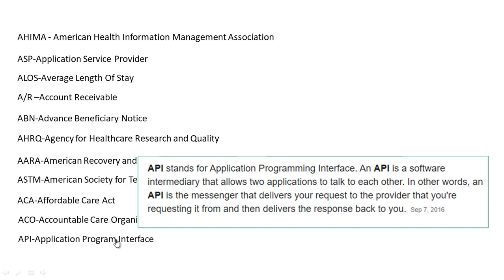API stands for Application Program Interface. An API is a software intermediary that allows two applications to talk to each other. In other words, an API is the messenger that delivers your request to the provider you are requesting from and then delivers the response back to you.